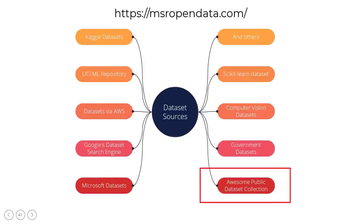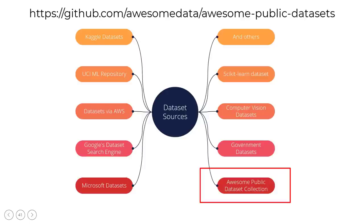Awesome Public Dataset Collection: this collection has high-quality datasets listed in a logical and well-organized fashion according to categories such as agriculture, biology, climate, complex networks, and so on. It is recommended that you check the dataset's licensing before downloading it, even though the vast majority of datasets may be downloaded at no cost. The URL is: https://github.com/awesomedata/awesome-public-datasets.